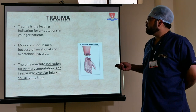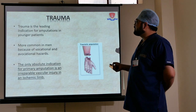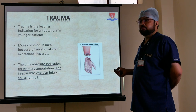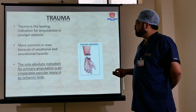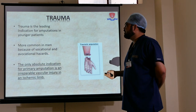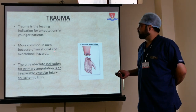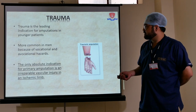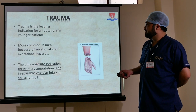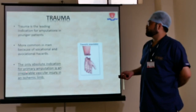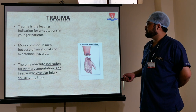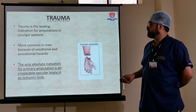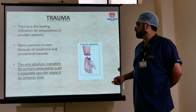Trauma is the leading indication of amputation in younger patients, more common in men due to occupational and recreational hazards. The only absolute indication of primary amputation is an irreparable vascular injury in the ischemic limb.